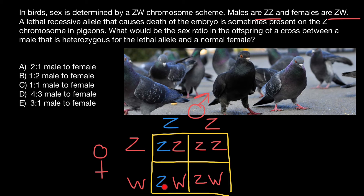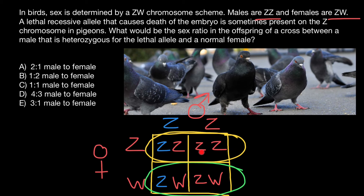ZW individuals are going to be female. We have males on top. For males carrying the lethal allele on one Z chromosome, the other Z chromosome carries a normal allele, so the phenotype is going to be normal. Males with two normal Z chromosomes are also phenotypically normal. So all male progeny are expected to be phenotypically normal. But look at what happens to the female progeny: females have a W chromosome, which is different from Z, so there is no second Z chromosome to balance the one carrying the lethal allele. That progeny is not going to develop, and the embryo is going to die.